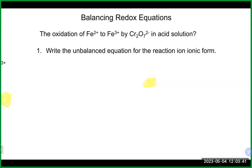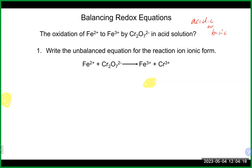Now let's talk about balancing more complex redox reactions in acidic or basic conditions. For simple redox reactions, you just ensure electrons are equal in both half reactions and add them. For more complex ones balanced in acidic or basic conditions, there's more work to do. A great first step is to assign oxidation numbers to figure out what is being oxidized and reduced.